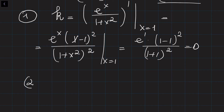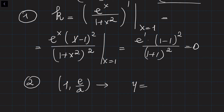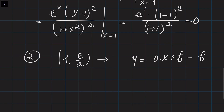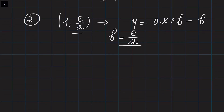In step two we need to find B. We know that the point with coordinates (1, e/2) lies on the line y = Kx + B. In our case it becomes y = 0·x + B, so y = B. This means B is equal to e/2. So K = 0 and B = e/2, and the equation of the tangent line is y = e/2.